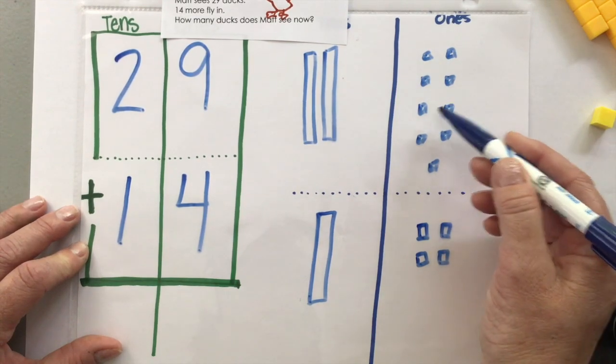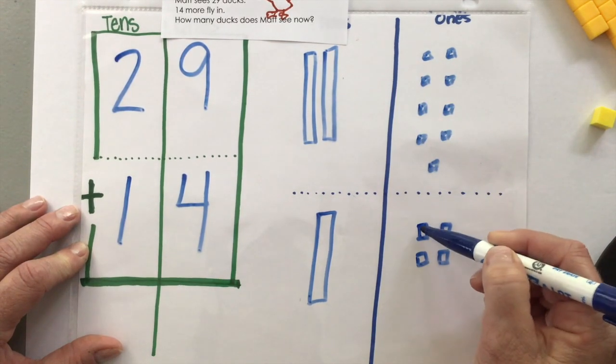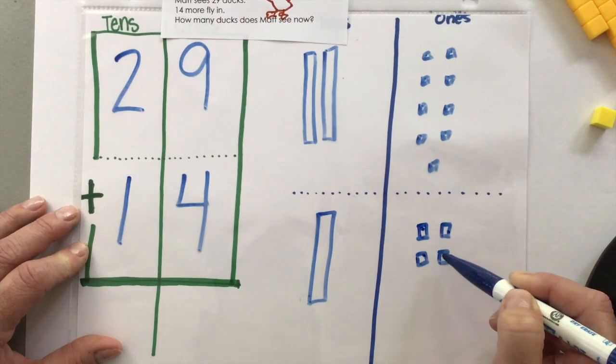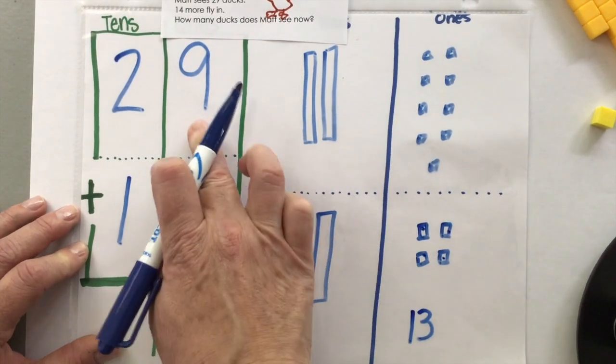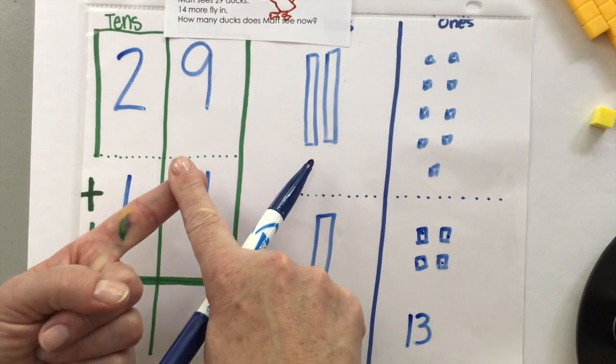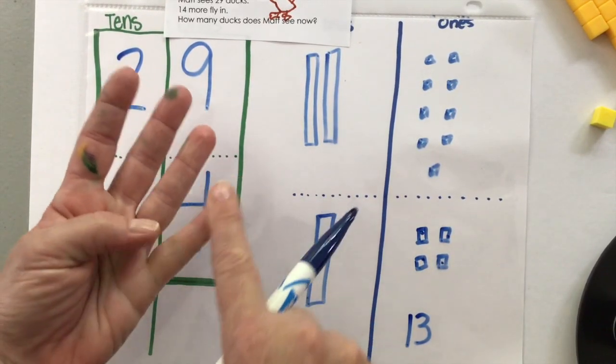Well, first, let's add our ones together. One, two, three, four, five, six, seven, eight, nine, 10, 11, 12, 13. Nine, 10, 11, 12, 13.